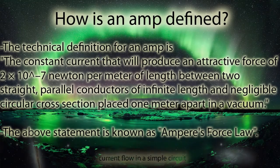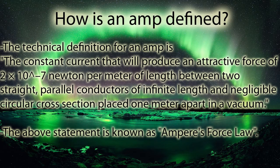How is the amp defined? The technical definition for an amp is the constant current that will produce an attractive force of 2 times 10 to the negative 7 newton per meter of length between two straight, parallel conductors of infinite length and negligible circular cross section placed 1 meter apart in a vacuum. The above statement is known as Ampere's force law.